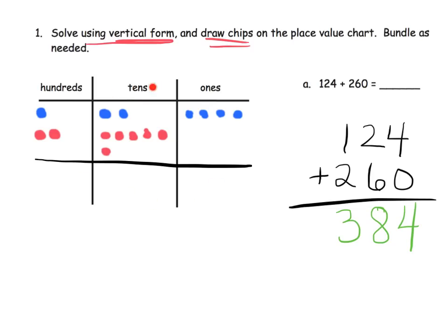Now we can verify that over here with our model. 4 plus nothing gives us 4 dots in the ones column. 2 tens plus 6 tens gives us 8 dots in the tens column. We don't have enough to bundle. And similarly, 1 dot plus 2 dots gives us 3 dots in the hundreds column. So our answer is 384.